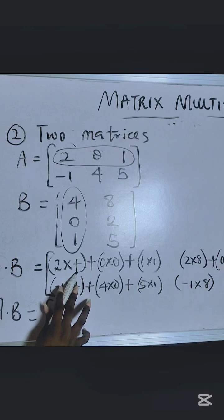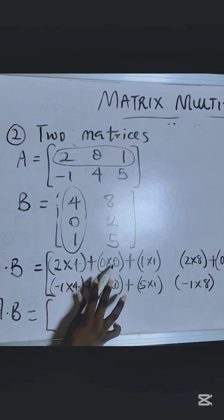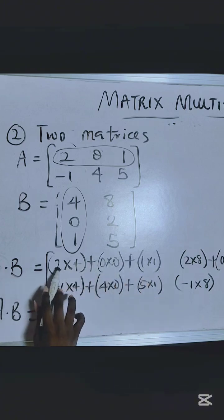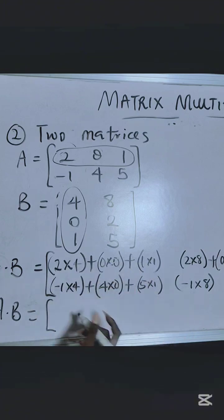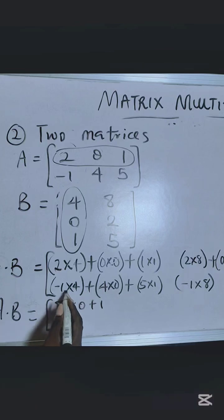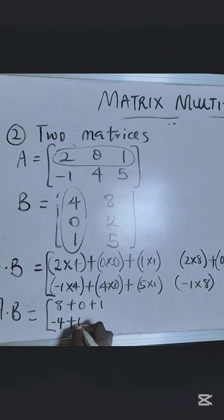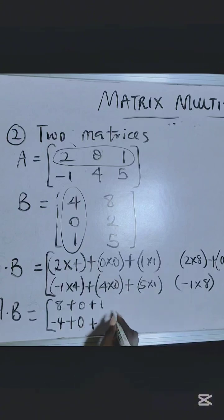2 times 4 is 8. 0 times 0 is 0, 1 times 1 is 1. So 8 plus 0 plus 1. For this one, you have minus 1 times 4 is minus 4, plus 4 times 0 is 0, 5 times 1 is 5.